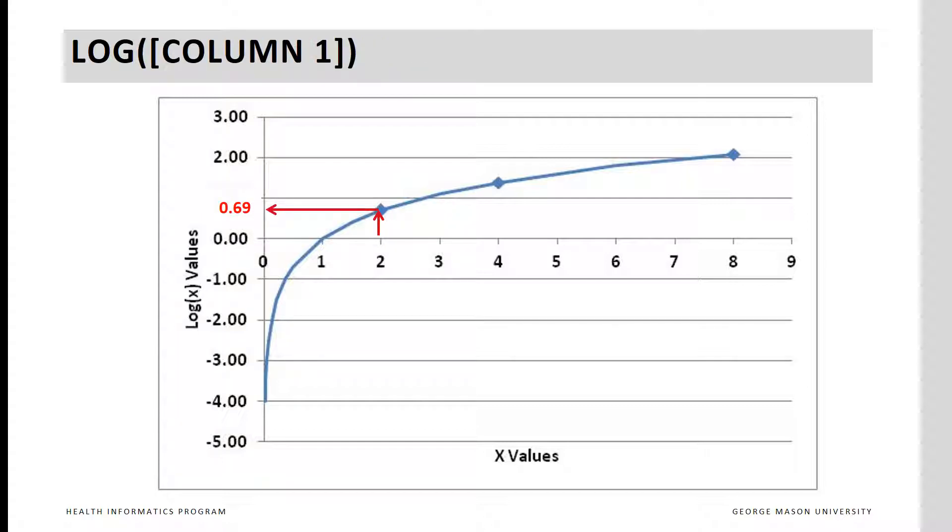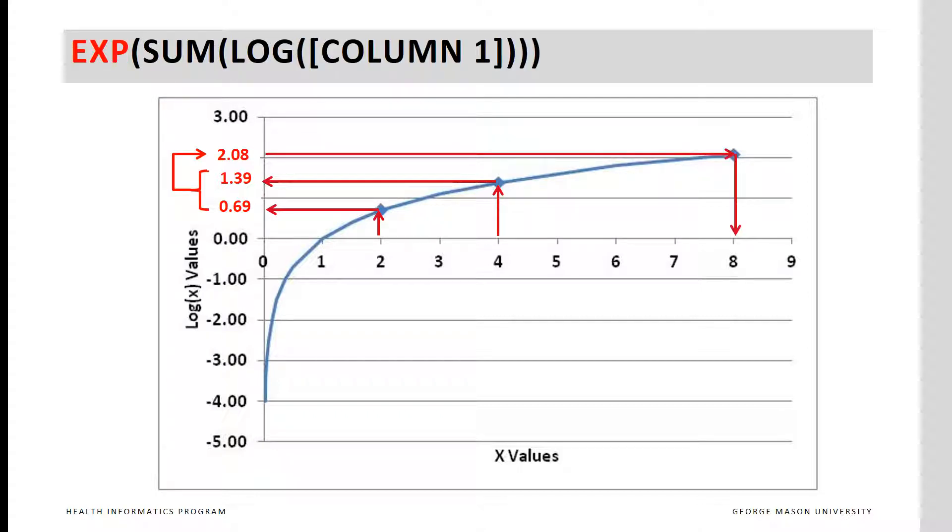Suppose the value in column 1 are 2 and 4. We want to calculate the product of these values. The first step is to take the log of these values. For 2, it is 0.69. Take the log of 4, it is 1.39. Sum these two logs, which gives us the value of 2.08.